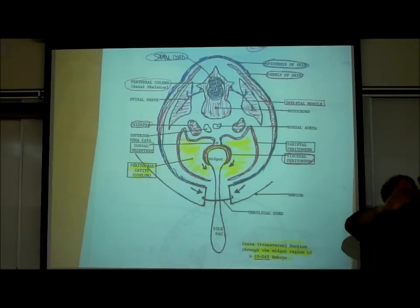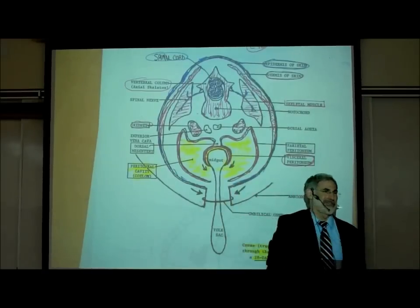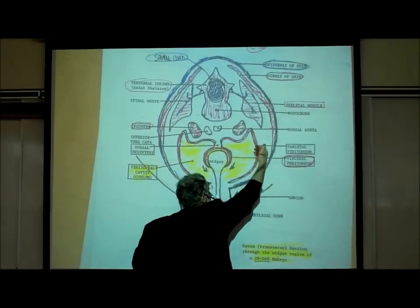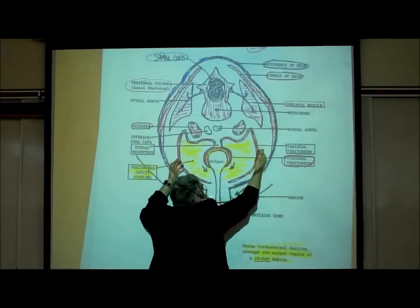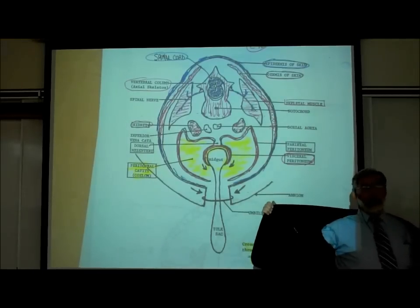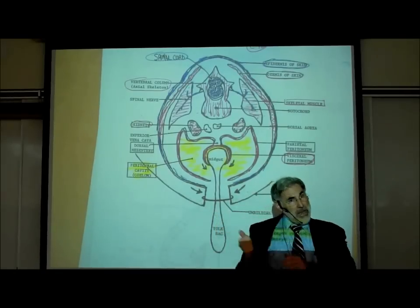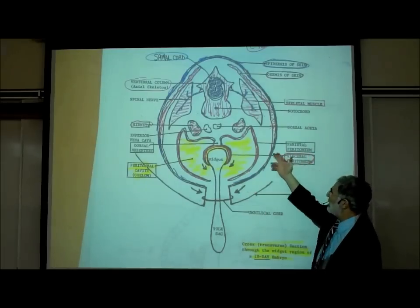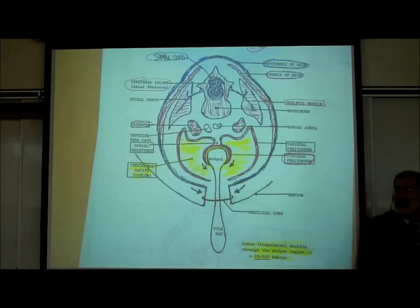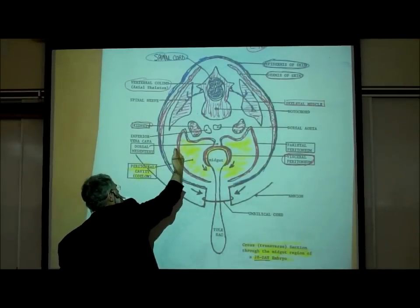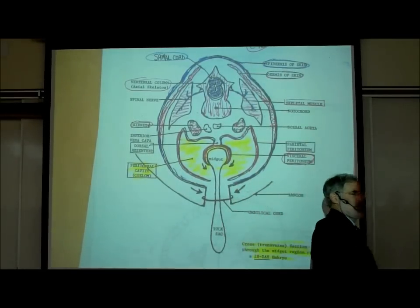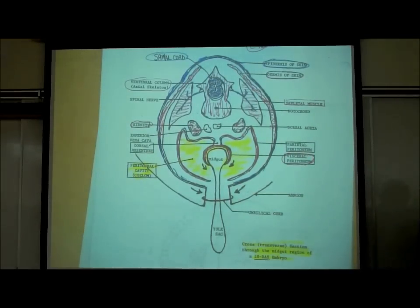The membrane on the inner wall of the abdomen is called the parietal peritoneum — parietal means attached to the wall. Just like there's a lining on the inside of a coat, there's a membrane on the inside wall of your abdomen. That's the parietal peritoneum, which developed from the somatic mesoderm. The area between the parietal peritoneum and the visceral peritoneum is called the peritoneal cavity or coelom — we first used that term originally on page A3.